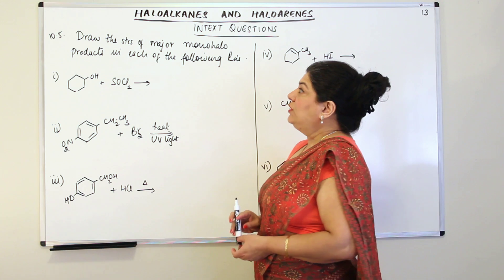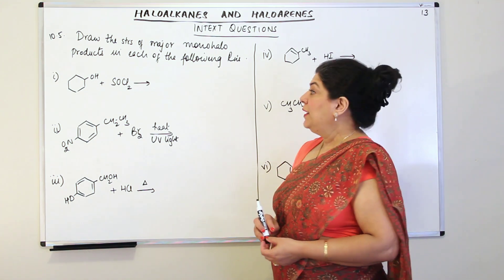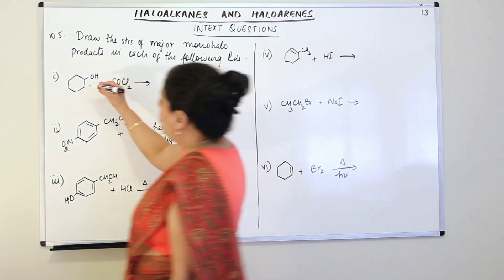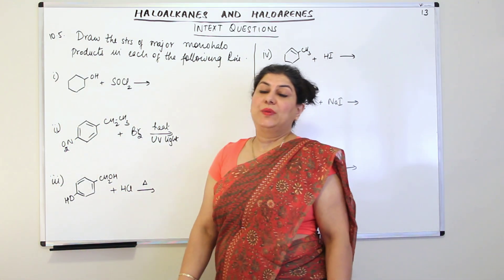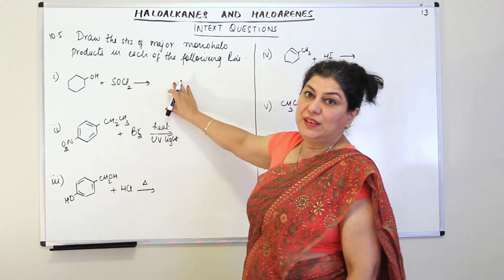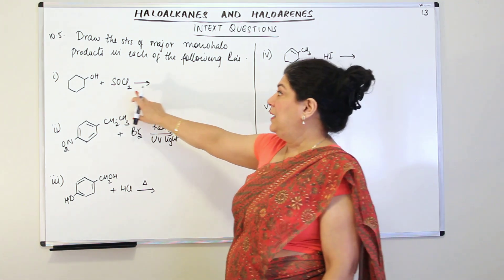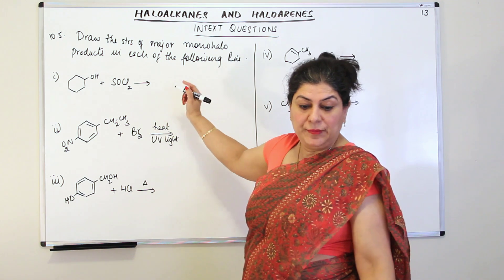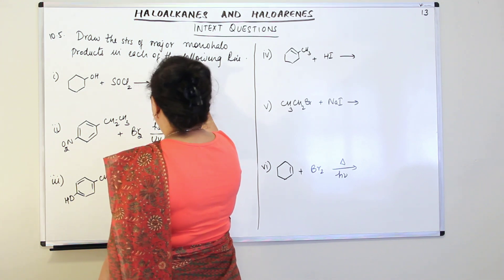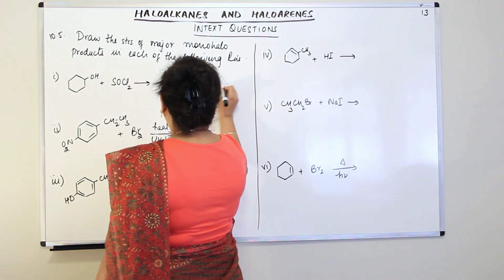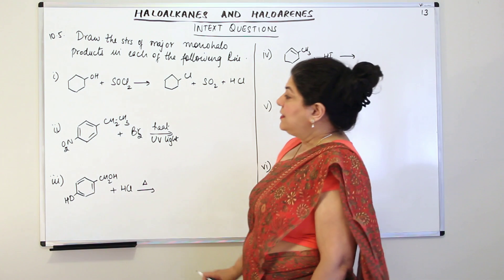The question asks: draw the structures of the major mono-halo products in each of the following reactions. The first reaction is cyclohexanol with thionyl chloride. When alcohols react with thionyl chloride, the alcoholic group is substituted by halogen — in this case chlorine. So the products would be the chloro derivative plus sulphur dioxide plus HCl.